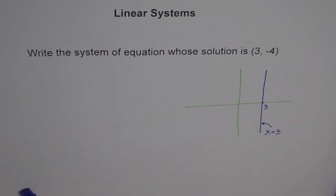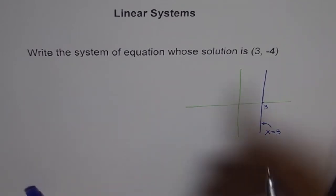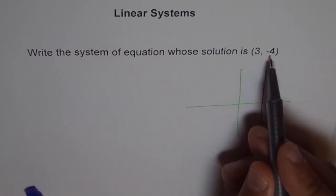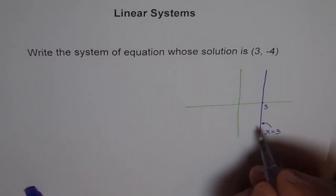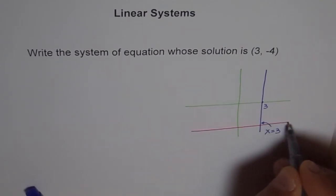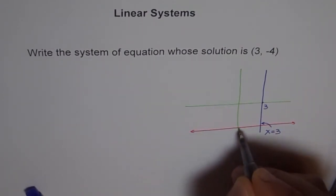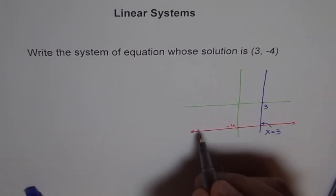Now, if I draw another line whose equation is y equals minus 4, so y equals minus 4 could be like this. Which goes through the point minus 4. So this line is y equals minus 4.